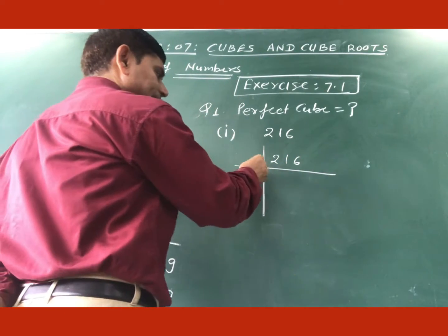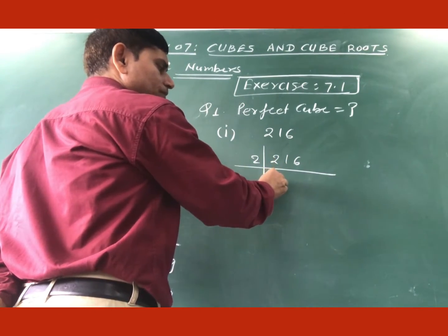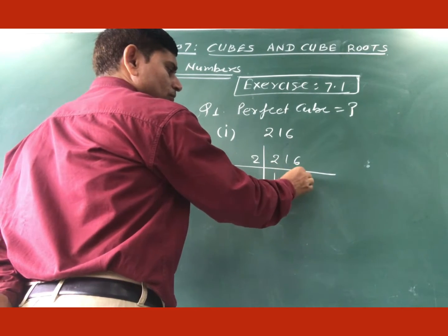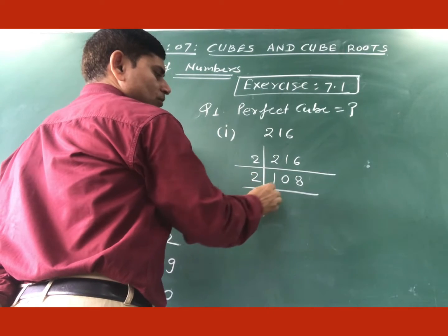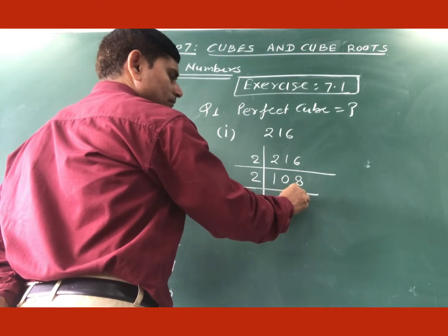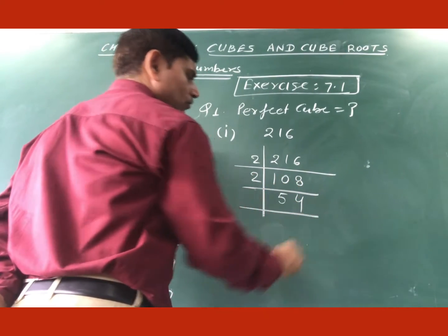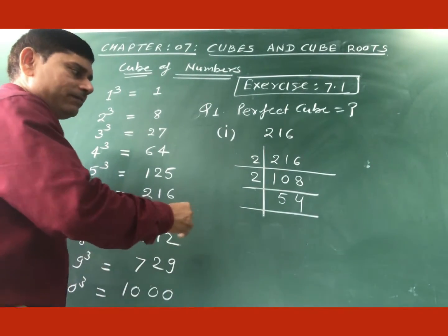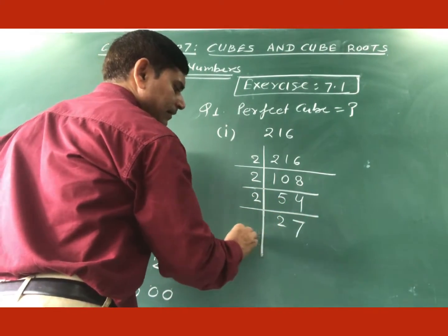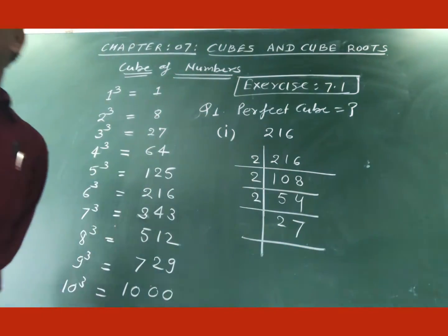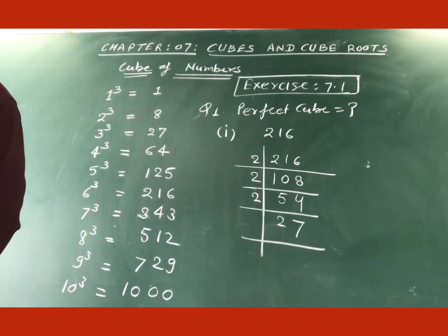That is 216. We can divide this by 2, 2 times 1 is 2 and 0. 2 times 8 is 16. And again by 2, so 2 times 5 is 10, 2 times 4 is 8. And again by 2, so we will get 27. And now this is not divided by 2, moving to the next digit.